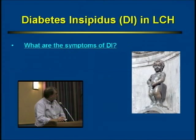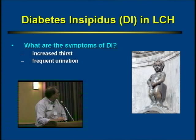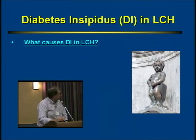The first will be the endocrine conditions. What are the symptoms of diabetes insipidus? They're increased thirst and frequent urination. What causes diabetes insipidus in LCH? At some level, we don't really know why LCH cells like to go to this part of the brain.